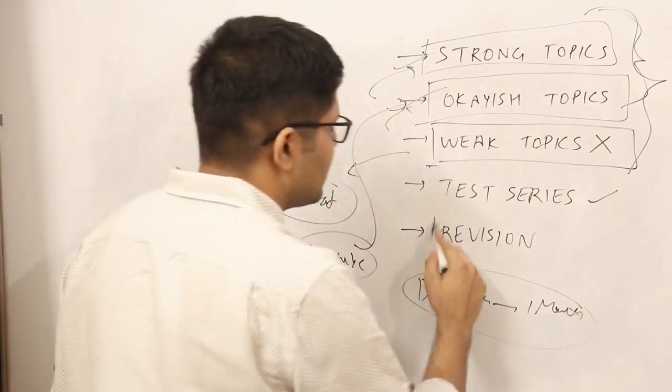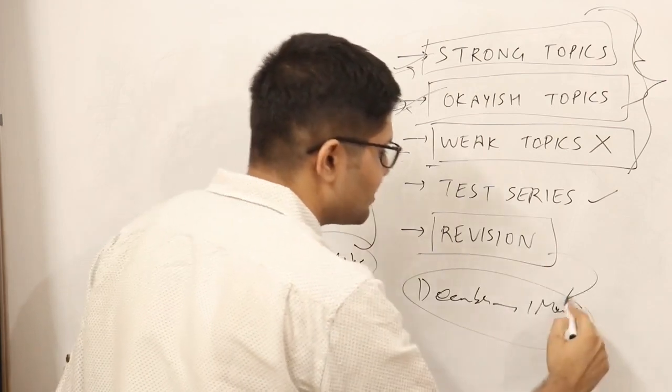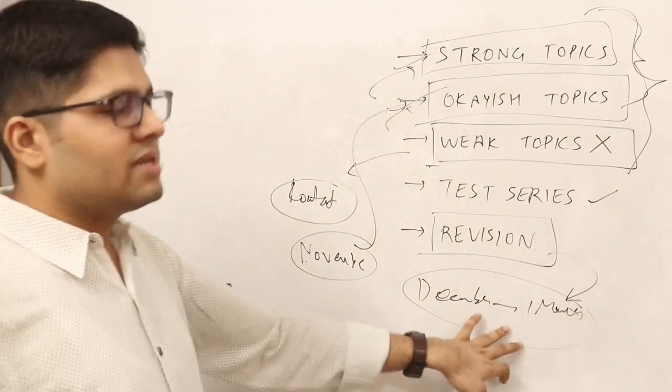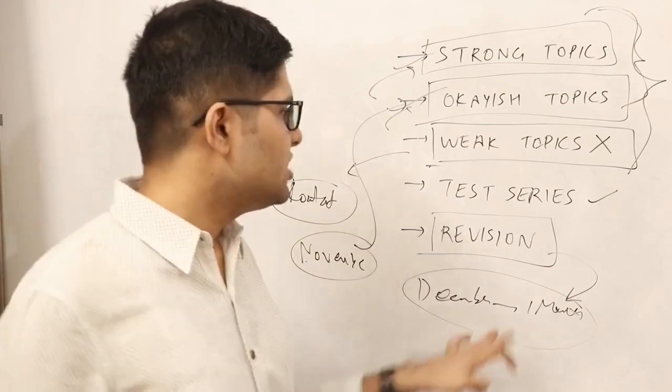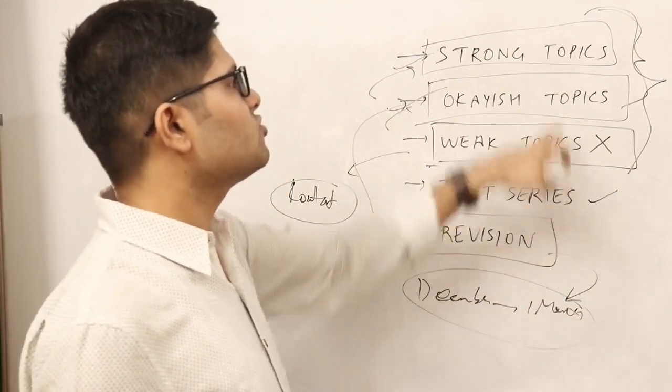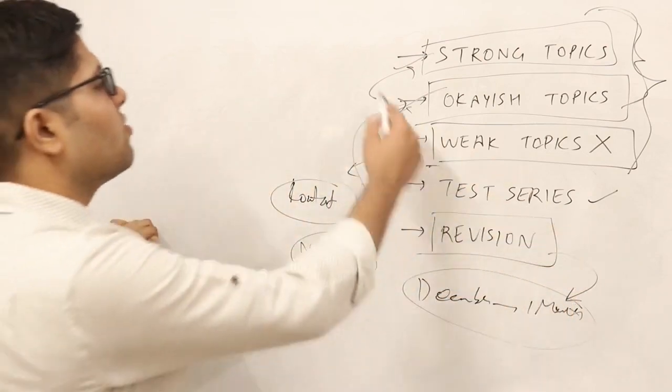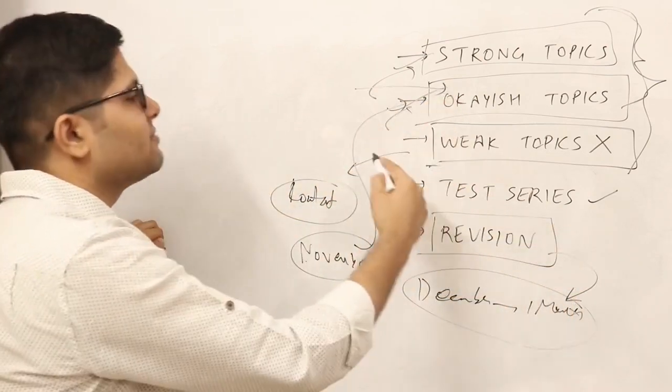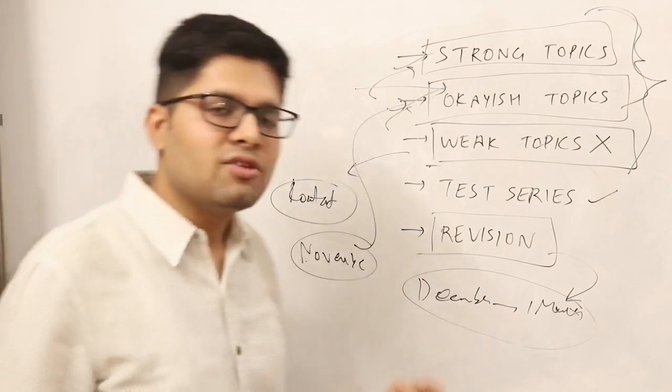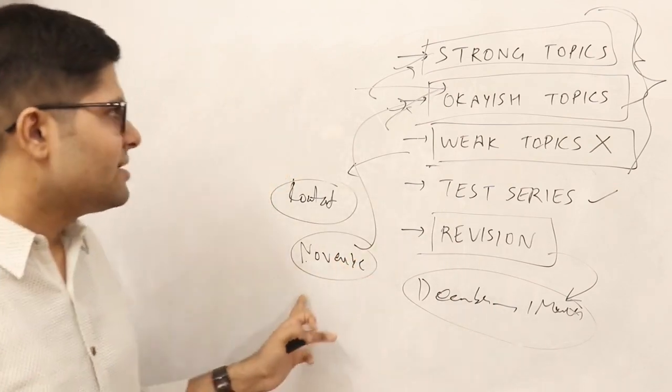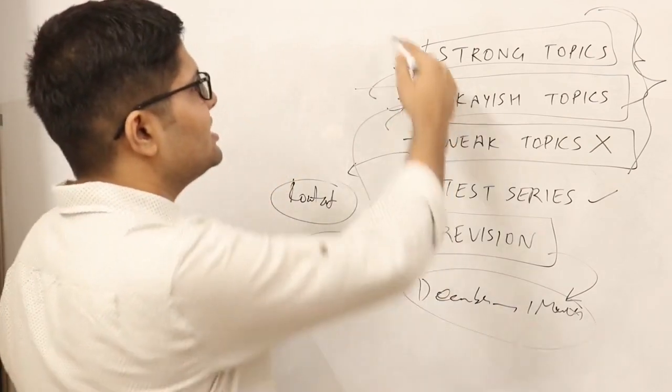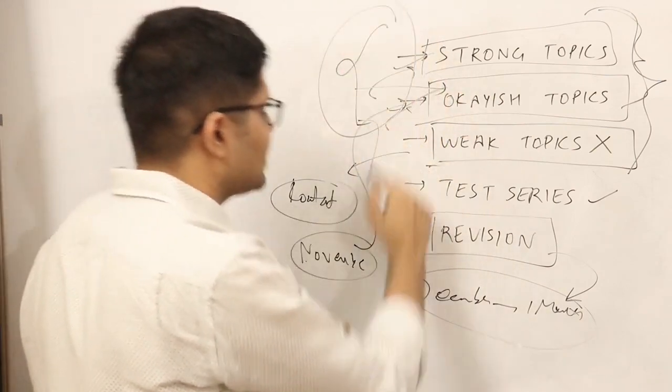Then comes revision. Revision should be done mostly in December. The last one month is dedicated only to these two things - revision and test series. You are not supposed to study anything new in the last one month. These weak topics we will study later. If you have to study weak topics, if you are thinking that it will happen in one or two days, then only study that in the period of November and October. These two should be our focus - strong and okish topics - and we will focus on the test series.